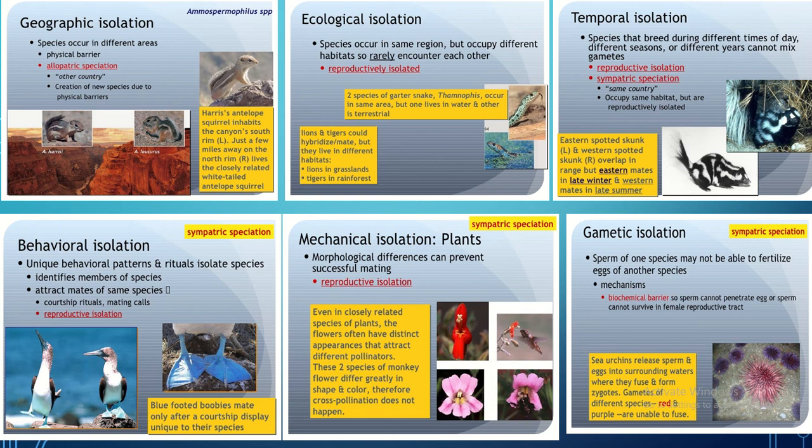Mechanical isolation occurs when plants face morphological differences that prevent successful mating even in closely related species. Flowers often have distinct appearances that attract different pollinators. These two species of monkey flower differ greatly in shape and color, therefore cross-pollination does not happen, giving rise to two different species of flowers.